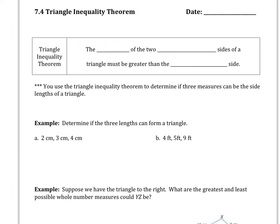First thing we're going to start off with is the Triangle Inequality Theorem. The Triangle Inequality Theorem says that the sum of the two smaller sides of a triangle must be greater than the third side. That's the big key there, must be greater than that third side. We use the Triangle Inequality Theorem to determine if three measures can be the side lengths of a triangle.